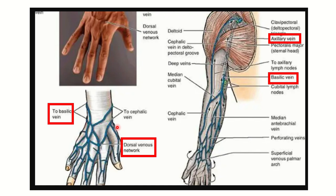After its origin, the vein goes anterior to the forearm. The cephalic vein runs upward along the lateral aspect of the upper limb, while the basilic vein runs upward along the medial aspect of the upper limb.